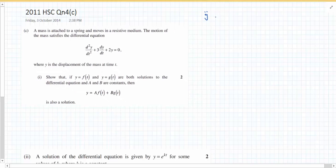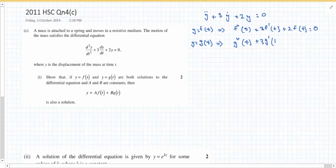y double dot plus 3 y dot plus 2 y equals 0. Then y equals f of t is the solution, which means f double dash t plus 3 f dash t plus 2 f(t) equals 0. And similarly y equals g(t) is the solution. So that's g double dash t plus 3 g dash t plus 2 g(t) equals 0. So that's what the question has given.